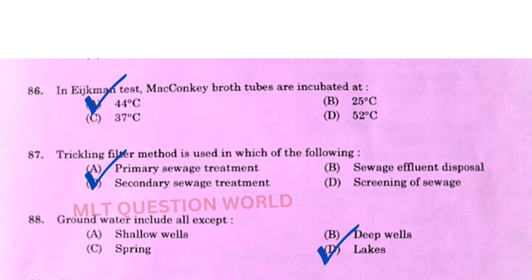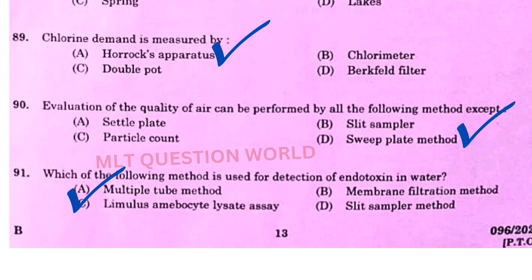Next question: Trickling filter method is used in which of the following? The right answer is option C, secondary sewage treatment. Next question: Ground water includes all except — the right answer is option D. Next one: Chlorine demand is measured by — the right answer is option A, Horox apparatus.